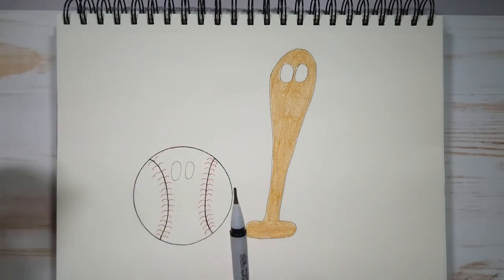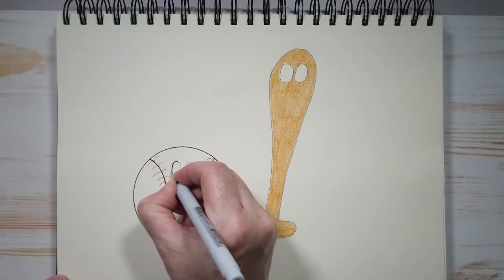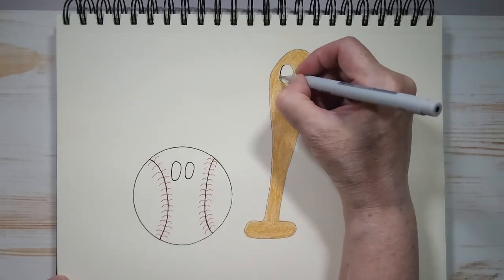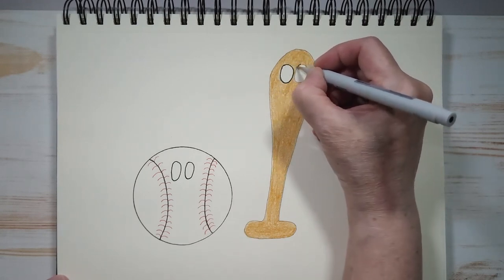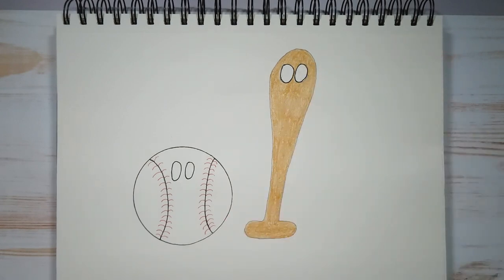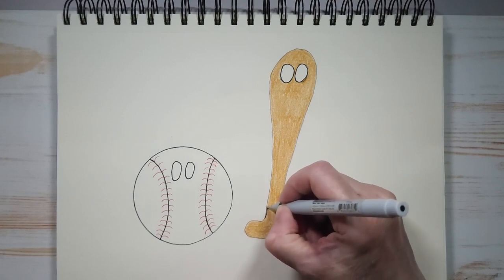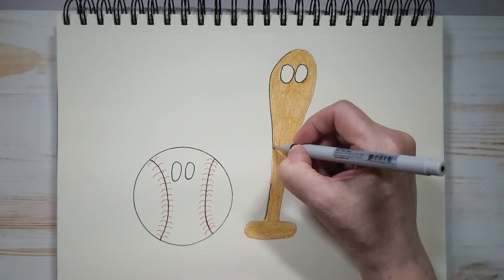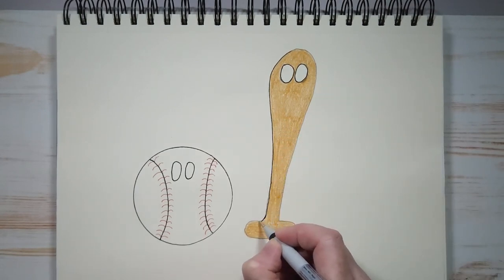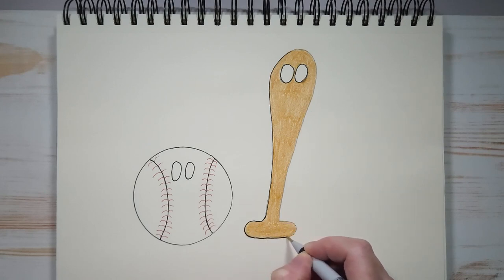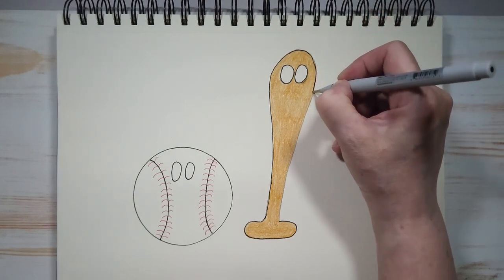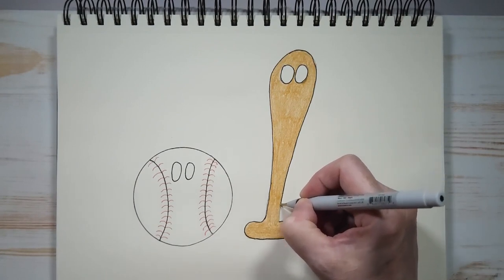What I'm going to do is take my fine tip marker again and I'm going to outline the eyes on both the baseball and the baseball bat. And while I have it, I'm going to outline my bat. Since I outlined the baseball, I'll outline the baseball bat as well. I'm being careful not to go outside the lines too much. You can take your time doing this. And like I said, if you don't have a fine tip black marker, you could use a coloring pencil. I just think it looks really nice when you outline.